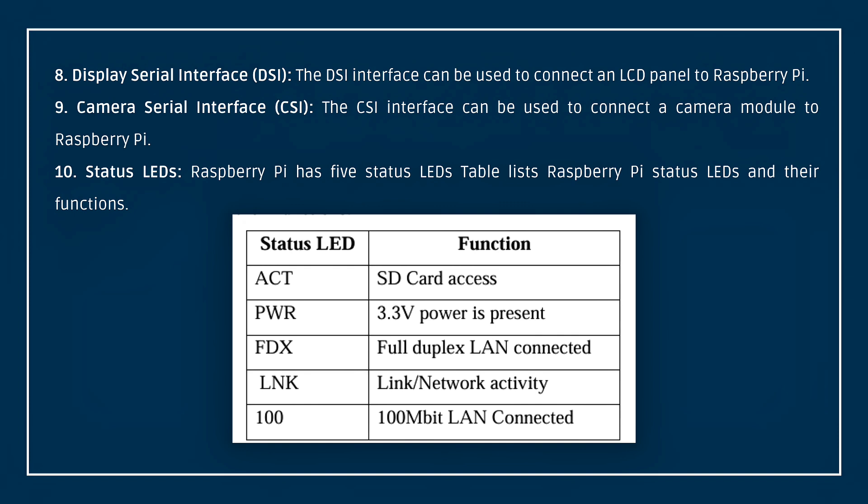Then, Display Serial Interface (DSI). If you use a DSI interface, you can connect a display to the Raspberry Pi. Then, Camera Serial Interface (CSI). If you use a CSI interface, you can connect a camera module. Then, Status LEDs — there are 5 Status LEDs, shown in a table of Raspberry Pi Status LEDs and their functions.